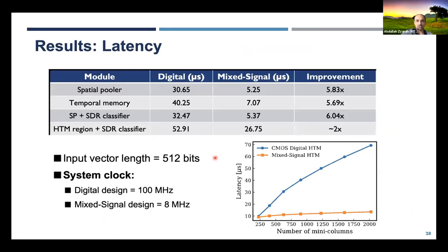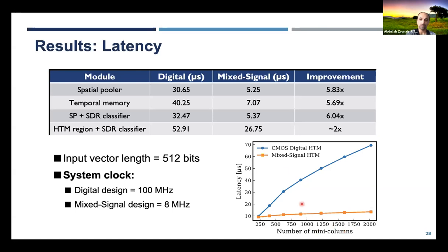Regarding latency, we estimated it as the time required to process one input vector after encoding. Every analog input to the HTM is encoded with 512 bits. We estimated latency for our digital design running at 100 MHz, and our mixed signal design running at 8 MHz. Interestingly, in all scenarios the mixed signal design offered less latency despite running at a lower speed. This gap gets bigger as we scale the network, because many operations in the digital design are sequential due to memory constraints — for example, to compute the overlap score or tune permanence values in conventional memory, you must read, change, and write back each value sequentially, each requiring at least one clock cycle.